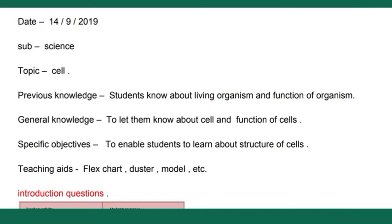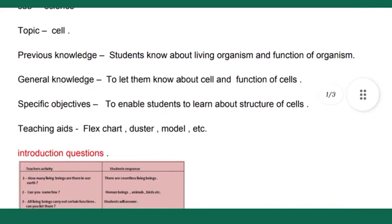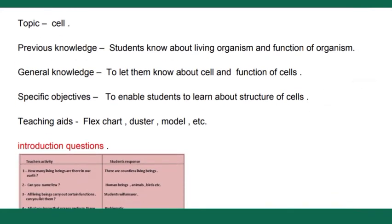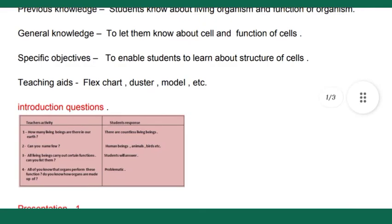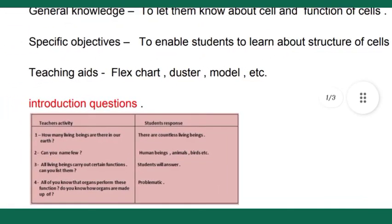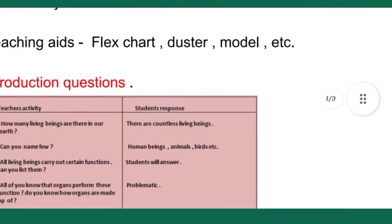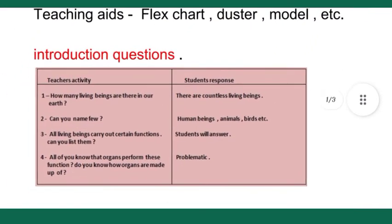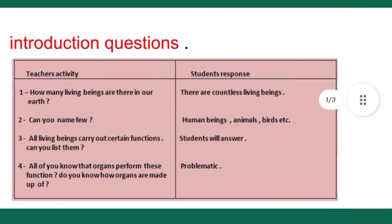You can write a few extra points if you need. For specific objectives, you have to write 'to enable students to learn about structure of cells', and you can add two or three more points. For teaching aids, we write as usual flex chart, duster, model - whatever teaching aids we're going to use while teaching students, we have to mention all those things here.